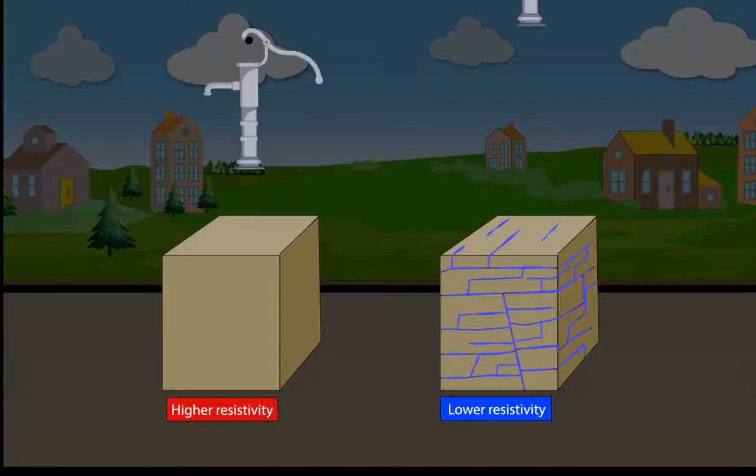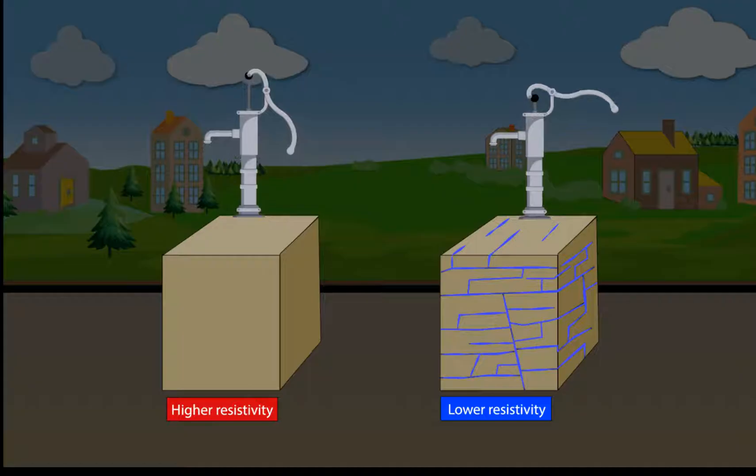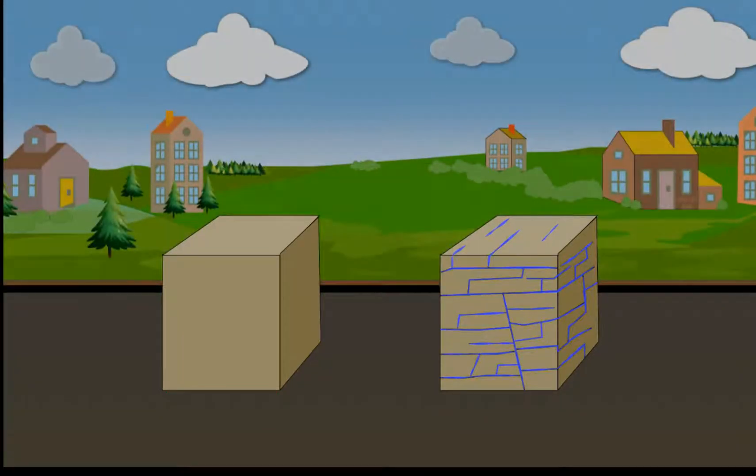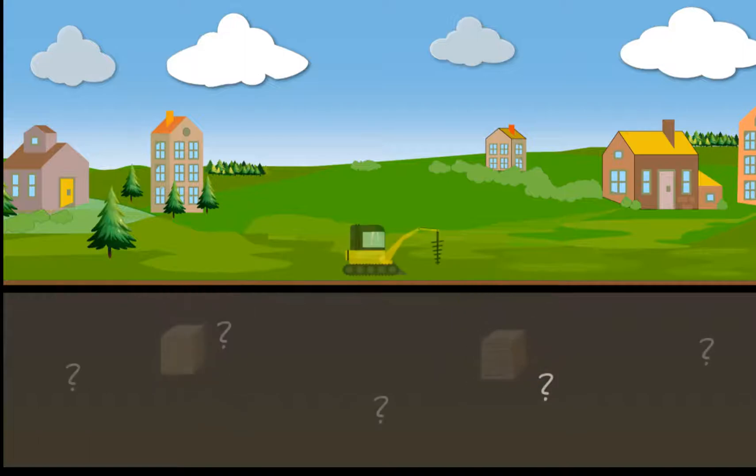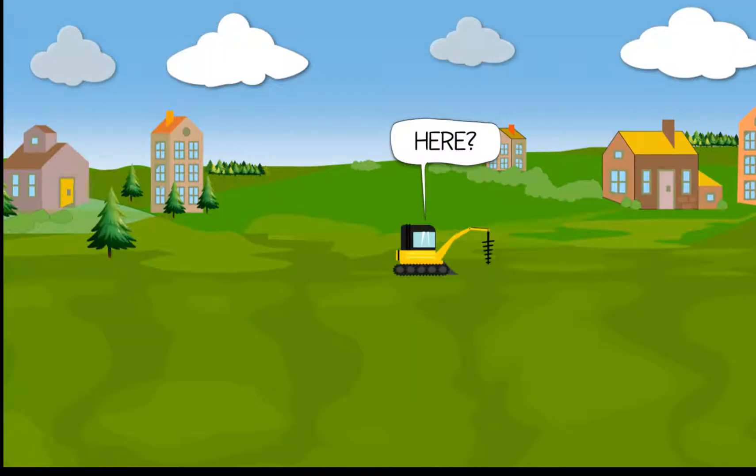For a water supply well, the best place to drill is into rock with a lot of fractures because a pump can easily draw water up through the fractures. So, the best place to drill will be a rock layer with low electrical resistivity. How can we, at the surface, use electricity to find a layer with low resistivity?